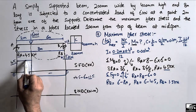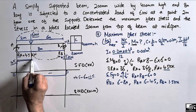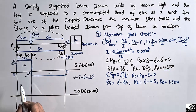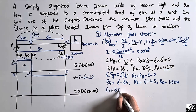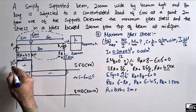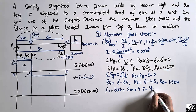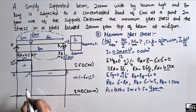The positive shear box is a rectangle with height 4.5 and base 2 meter. Area A1 equals base times height: 2 multiplied by 4.5 equals 9 kilonewton meter. This gives a bending moment of 9 kilonewton meter at the load point.